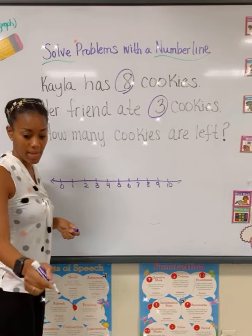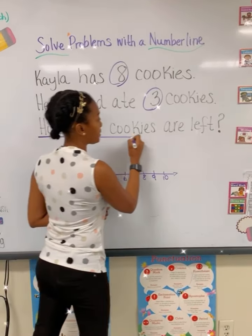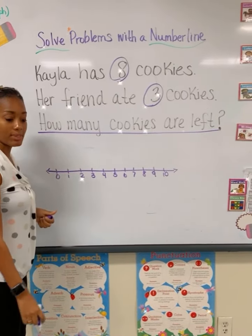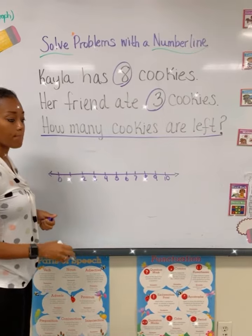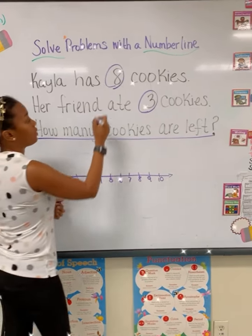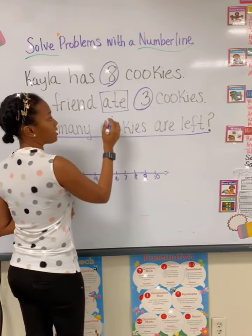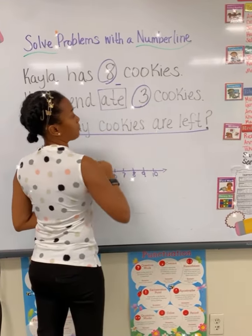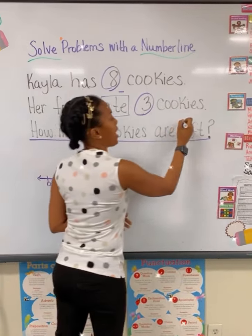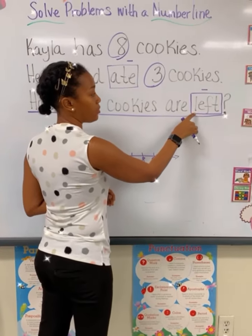What's the next thing that I should do? Underline the question. My question says: how many cookies are left? What's the next thing I should do? Box in the clue words. And what are my clue words? 'Ate' and 'left' because they tell you to subtract. The word 'ate' tells me that my operation should be subtract because if you're eating something, you're taking some of it away. And 'left' also tells me to subtract.